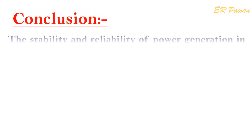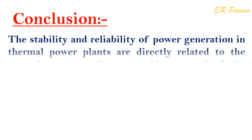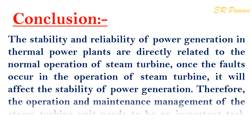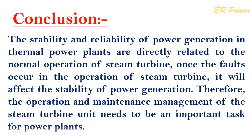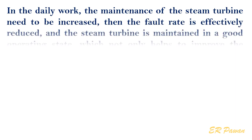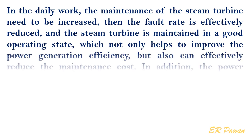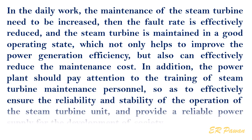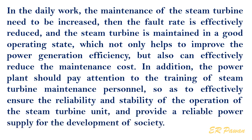Conclusion: The stability and reliability of power generation in thermal power plants are directly related to the normal operation of the steam turbine. Once faults occur in the operation of the steam turbine, they will affect the stability of power generation. Therefore, the operation and maintenance management of the steam turbine unit needs to be an important task for power plants. In daily work, maintenance of the steam turbine should be increased to effectively reduce the fault rate and maintain the steam turbine in a good operating state, which helps improve power generation efficiency and effectively reduce maintenance costs. In addition, the power plant should pay attention to the training of steam turbine maintenance personnel to ensure reliability, stability, and a reliable power supply for the development of society.